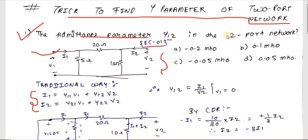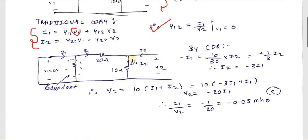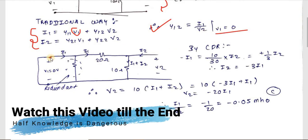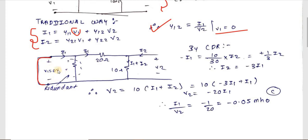Y12 is defined as I1 divided by V2, when V1 equals 0. So you make V1 equal to 0 by short-circuiting it. With V1 = 0 volts appearing across that resistance, the voltage drop across it is 0, meaning no current flows through that branch — it becomes a redundant resistance.